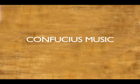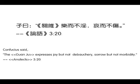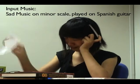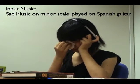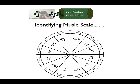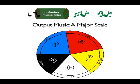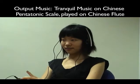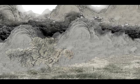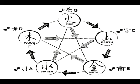Confucius' interest in music is due essentially to its educational and ethical motivations. The Confucius filter works by identifying the scale of the input music based on a probabilistic model. It then transforms the music into the Chinese pentatonic scale by restoring semi-tone notes to full tones. The output music from the filter is visualized in the form of a traditional Chinese painting.